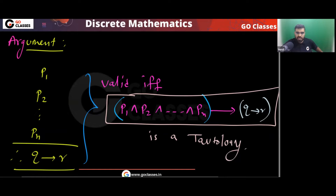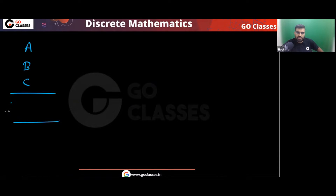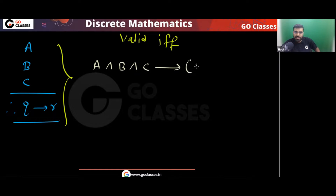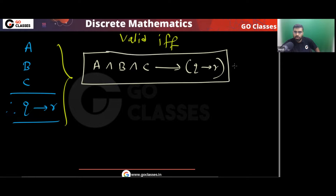Now I'm going to do something interesting. Assume the premises are A, B, C and the conclusion is Q implies R. This argument will be valid if and only if A ∧ B ∧ C → (Q → R) is a tautology. You know that α → β is the same as ¬α ∨ β. So using this, I can write that expression as: ¬A ∨ ¬B ∨ ¬C ∨ (Q → R), which is ¬A ∨ ¬B ∨ ¬C ∨ ¬Q ∨ R — this is a tautology.